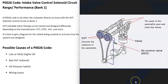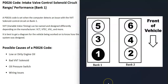Modern vehicles have what's called variable valve timing. It's a good system — it can provide better horsepower at different RPMs and allows the engine to get better gas mileage. When you get a P0026 code, the computer is seeing a problem with the variable valve timing on bank one side of the engine, and it needs to be troubleshot.